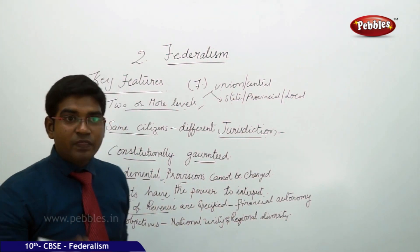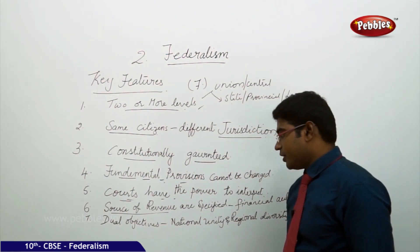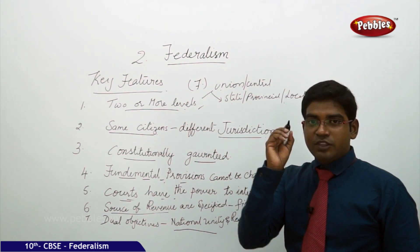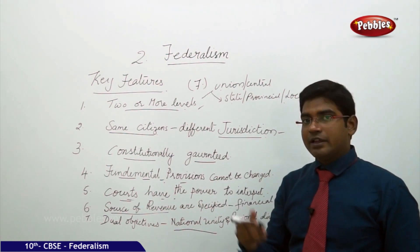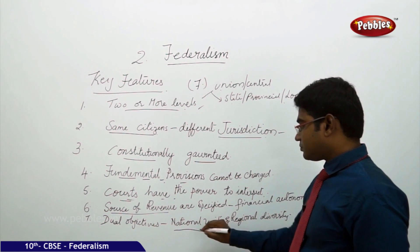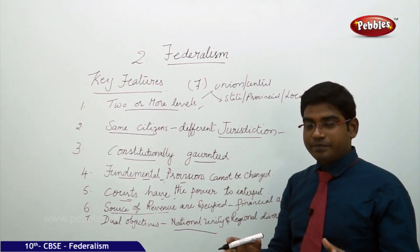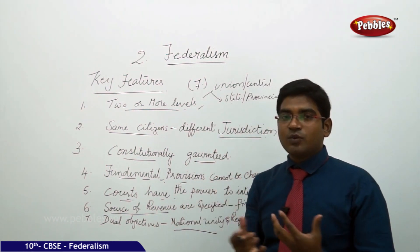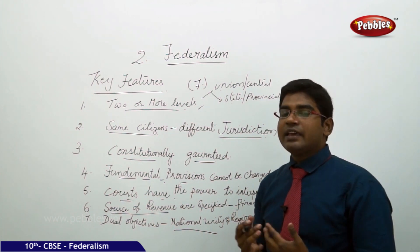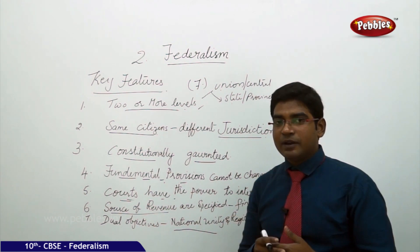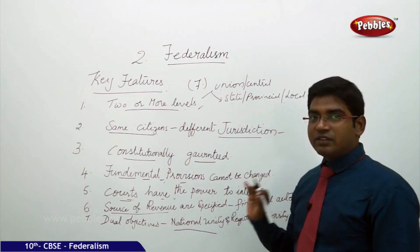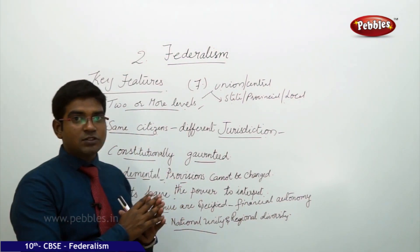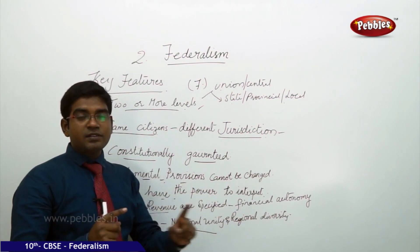The last key feature of federalism has a dual objective. First, though we have the division of power between the union and the states or local governments, we maintain the concept of national unity. There may be a division of power for the purpose of administration, legislature, or judicial convenience in delivering laws to the people. But in actual terms, the main concern is to have national unity, while the other major concern is to accommodate regional diversity.